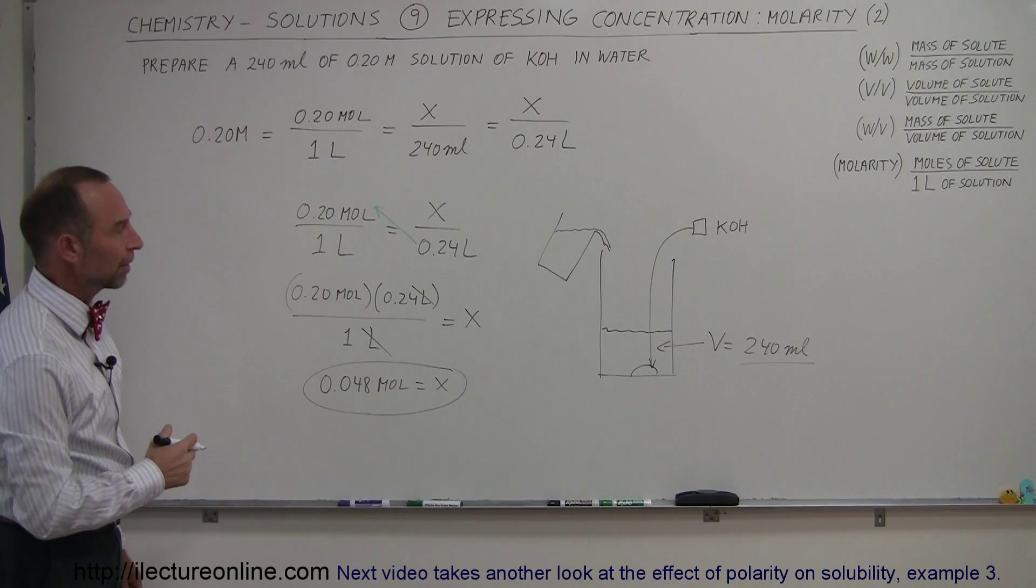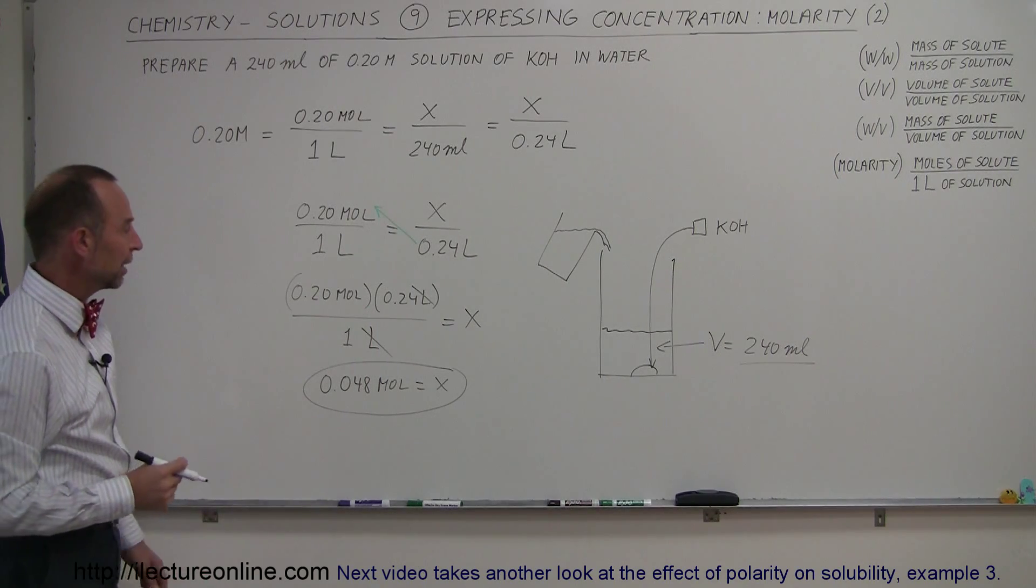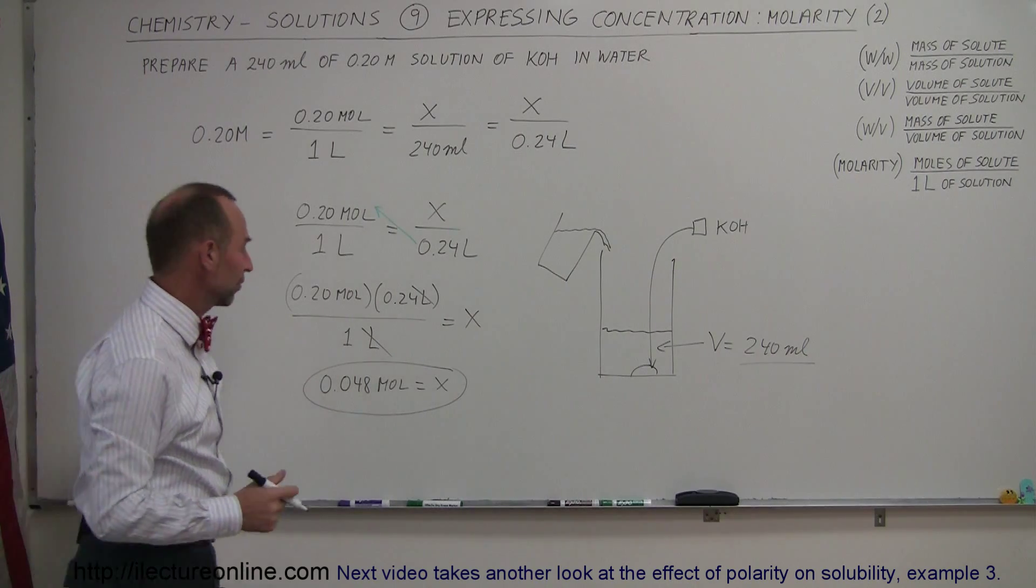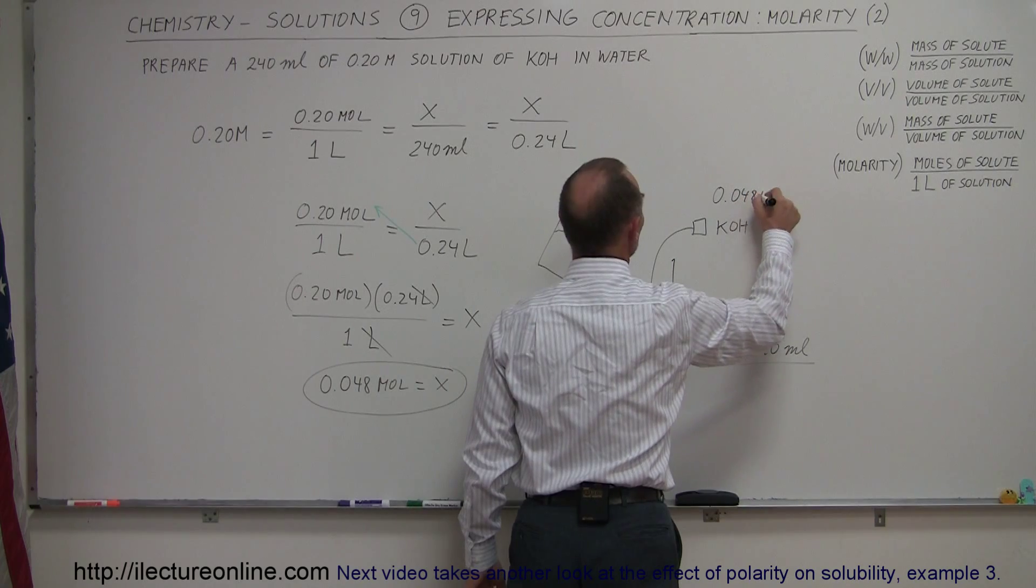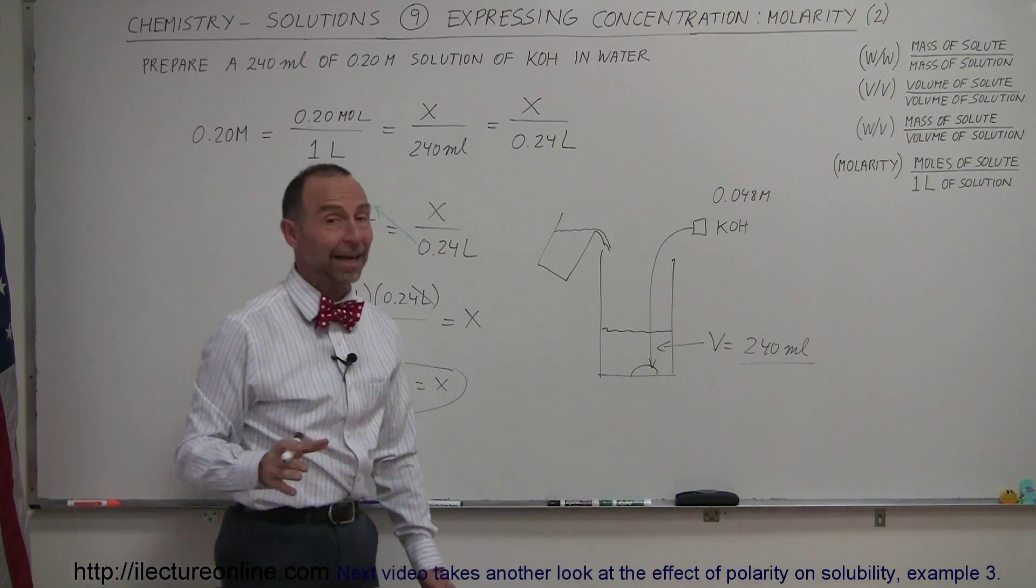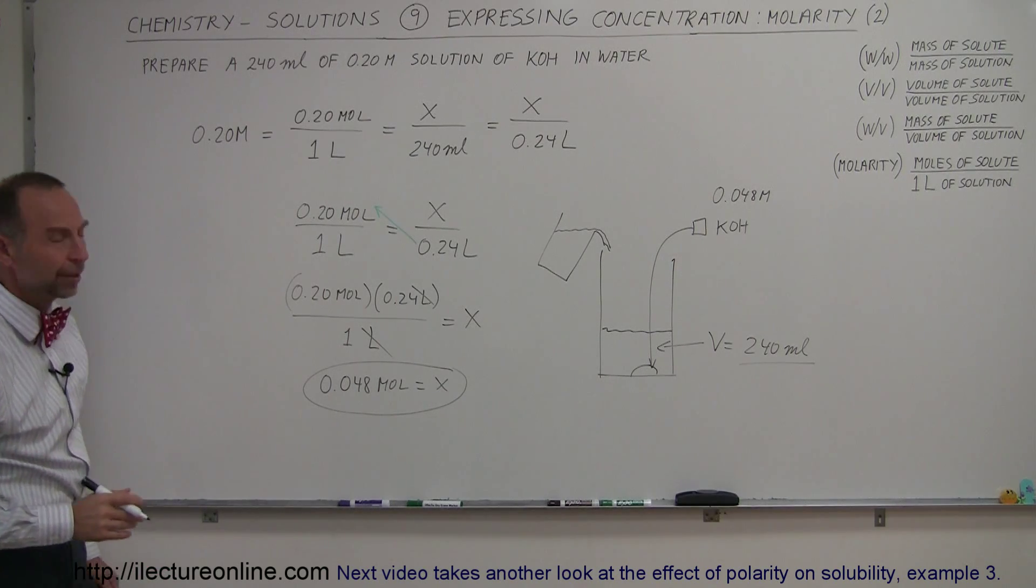So you start out with some potassium hydroxide, add water until it comes up to 240 milliliters. The amount of potassium hydroxide you need is 0.048 moles of potassium hydroxide. And that's how you figure out how to make a solution like that with that molarity, 0.2 molar.